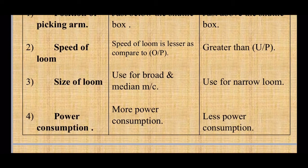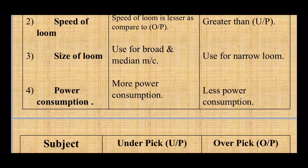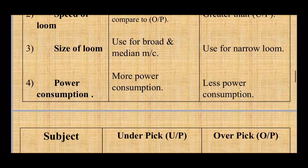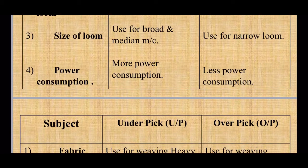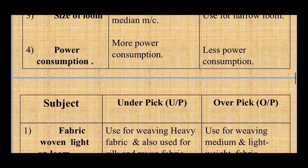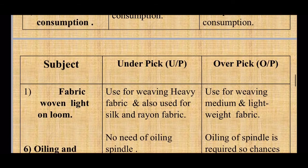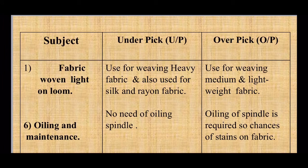Regarding speed, underpick looms run at lesser speed compared to overpick looms, which have higher speeds. Regarding size, underpick mechanism is used on broad and medium looms, whereas overpick is used for narrow-width looms like shirting. Power consumption is more in underpick looms compared to overpick. For fabric type, underpick mechanism is used for heavy fabrics, whereas overpick is used for medium and lightweight fabrics.